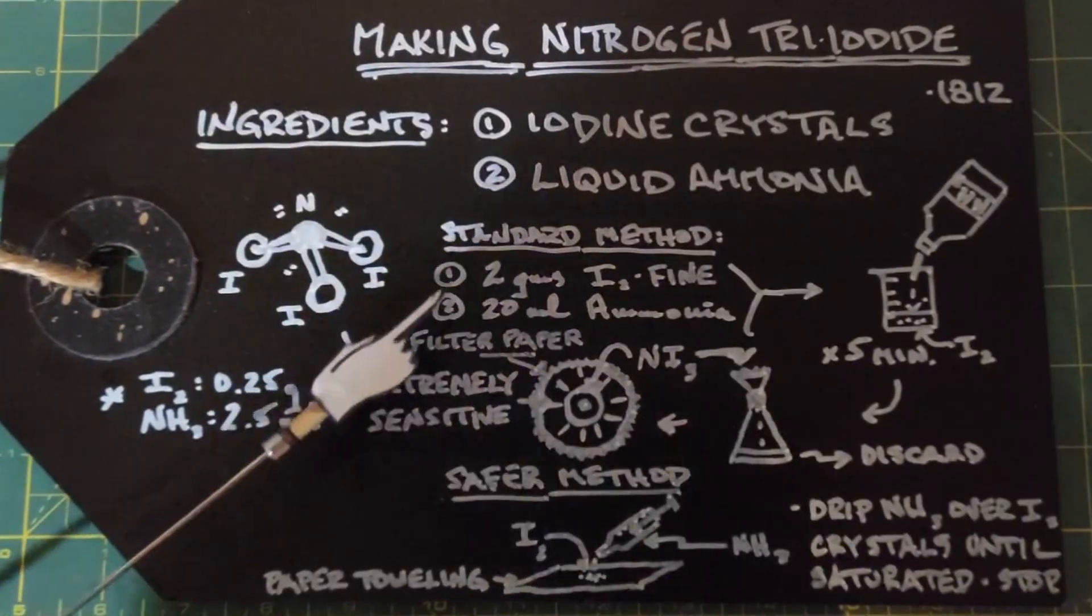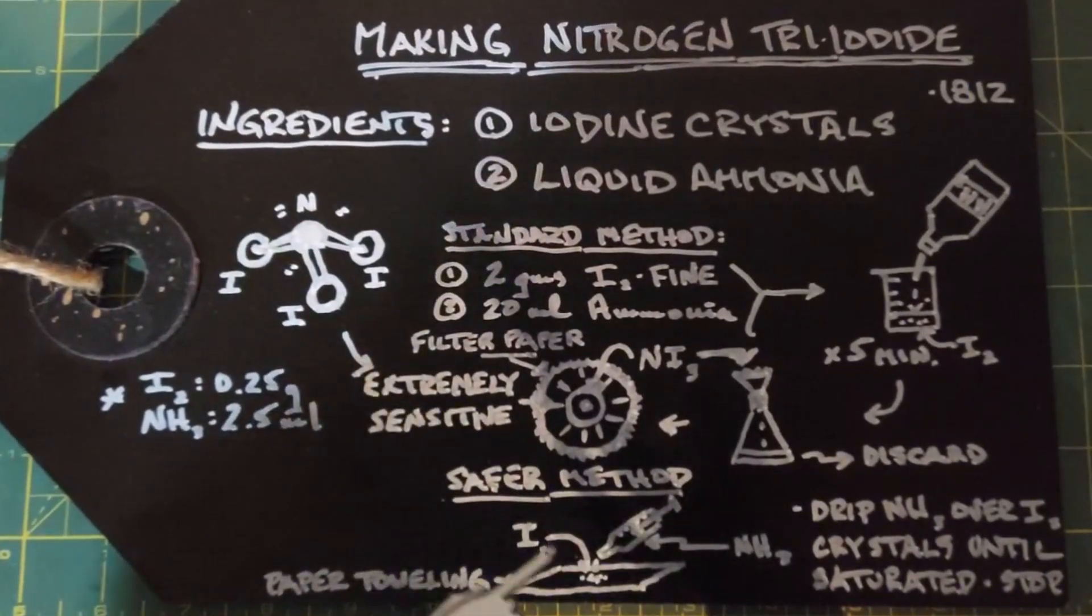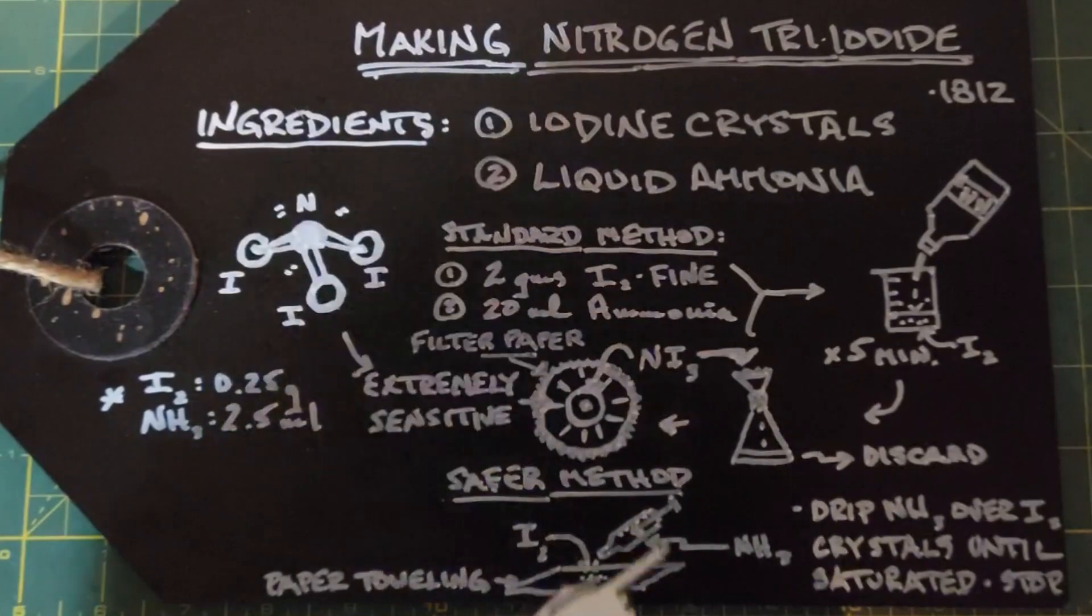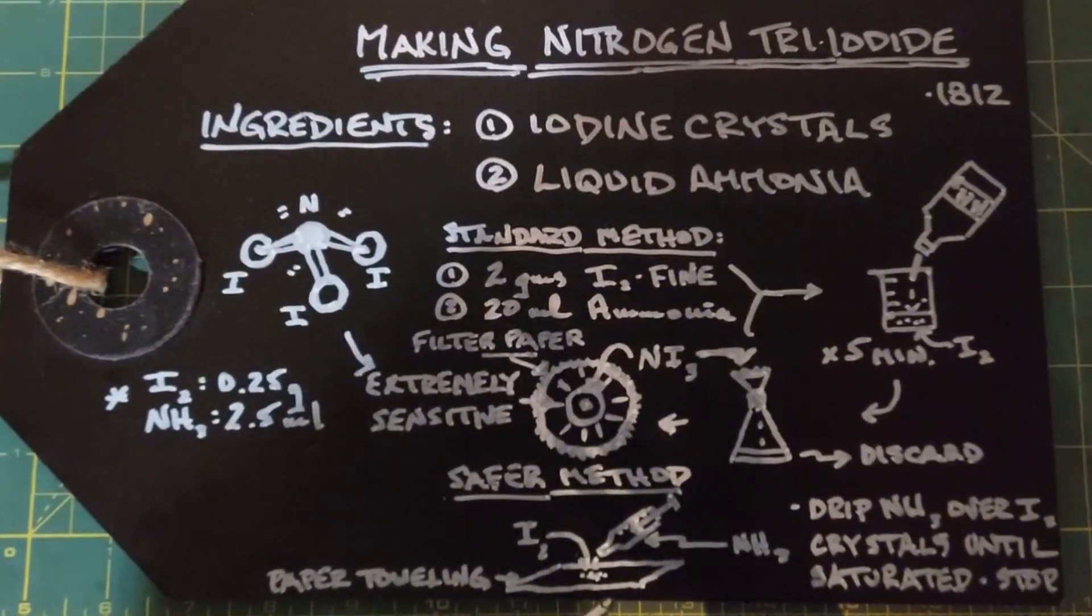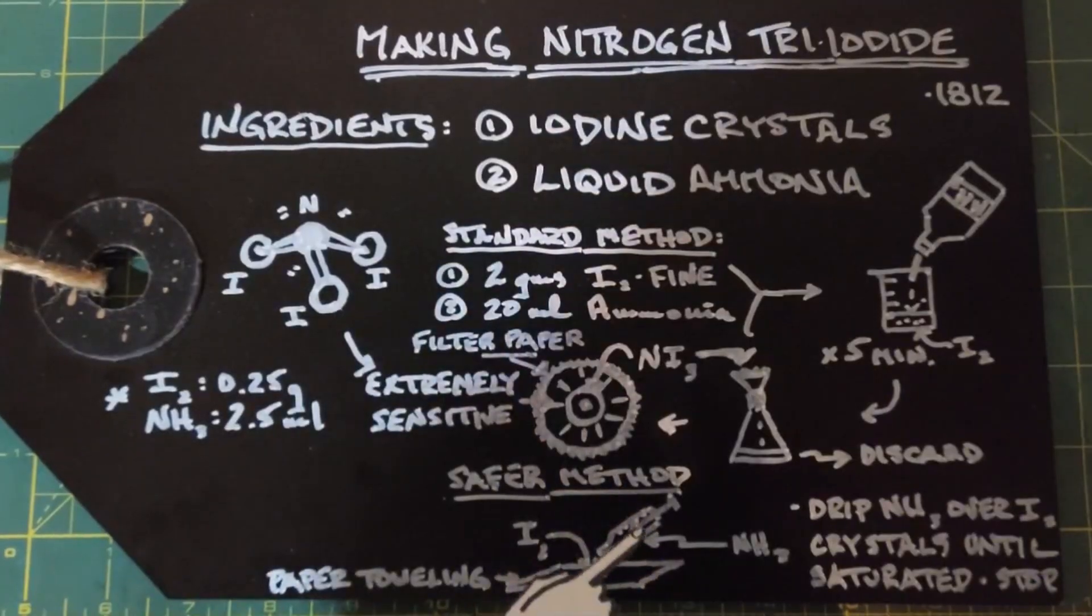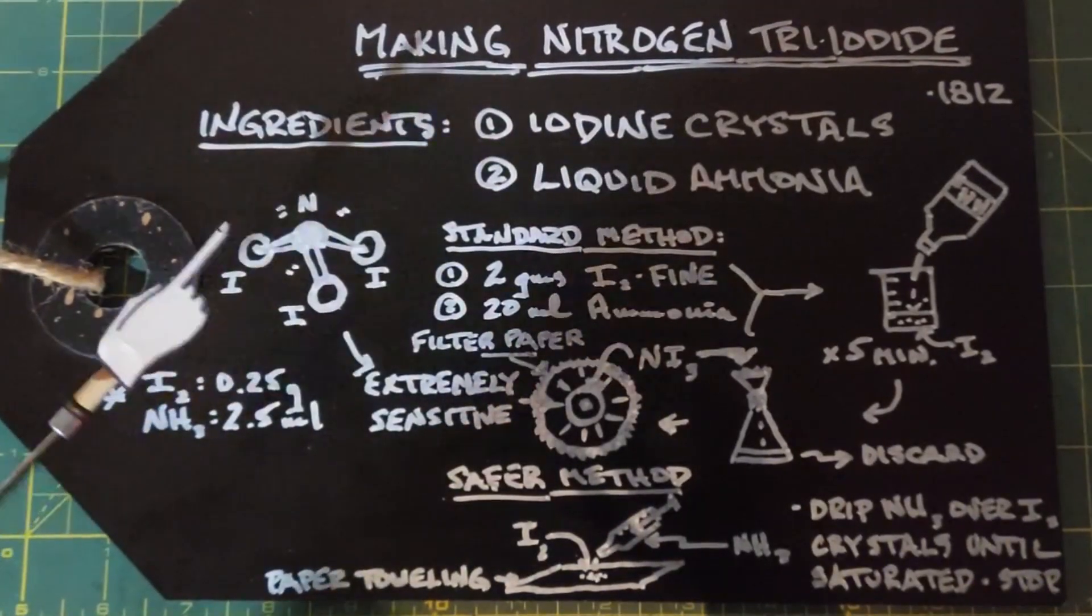For the second method, or the safer method as I'm calling it, you need a piece of paper toweling. Put your iodine crystals in a small pile in the middle, then just drip your ammonia over the pile of iodine crystals until they're saturated and then stop. Once these crystals are dry you'll find you can actually handle this very carefully, but it won't go off until it actually hits a hard object.